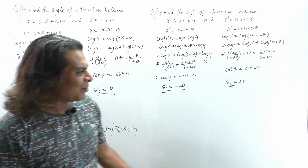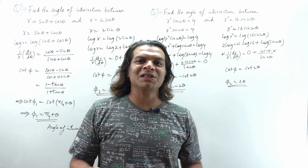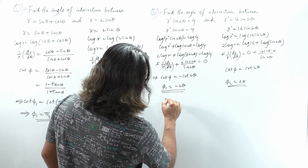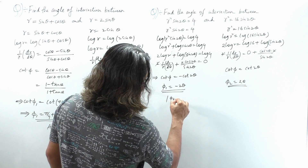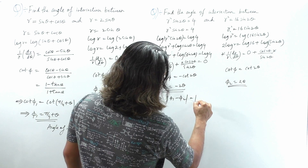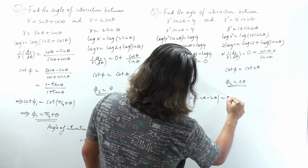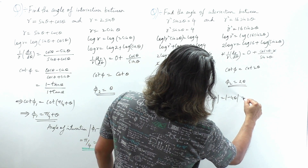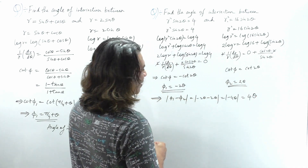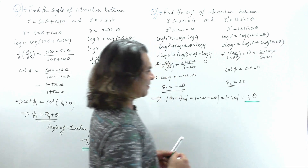I now have both angles. Using the formula, the angle of intersection = |φ₁ − φ₂| = |−2θ − 2θ| = |−4θ| = 4θ. But there is room to find the actual value of θ from the question.